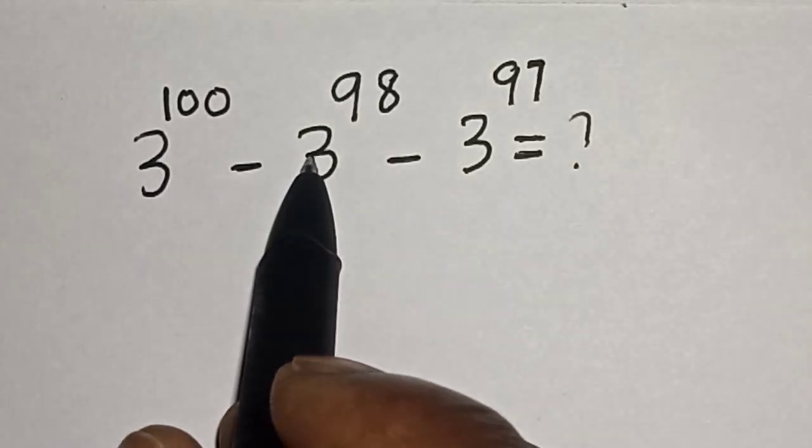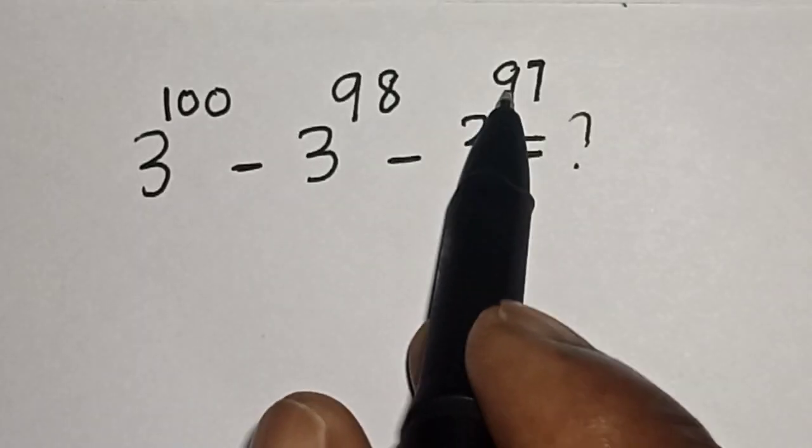3 raised to power 100 minus 3 raised to power 98 minus 3 raised to power 97 is equal to what?